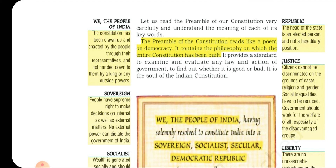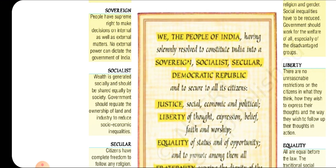'Socialist' means wealth is generated socially and should be shared equally by society. The government should regulate the ownership of land and industry to reduce socio-economic inequalities. The economic activities in our country should have an equal role for both individuals and the government — it is not totally handed over to individuals, and not totally handed over to the government. There should be a balance between the two.